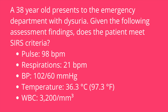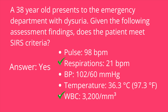Question two: a 38-year-old patient presents to the emergency room with dysuria. Given the following assessment findings, does the patient meet SIRS criteria? A pulse of 98 beats per minute, respirations of 21 breaths per minute, a blood pressure of 102 over 60, a temperature of 36.3 degrees Celsius, and a white blood cell count of 3,200. The answer is yes. The patient meets two of the SIRS criteria: a respiratory rate over 20 breaths per minute, and a white blood cell count under 4,000.